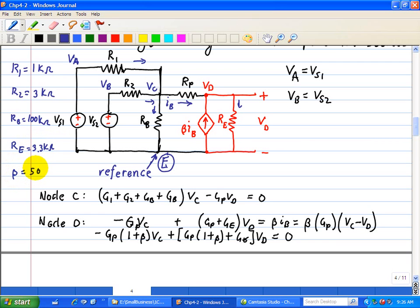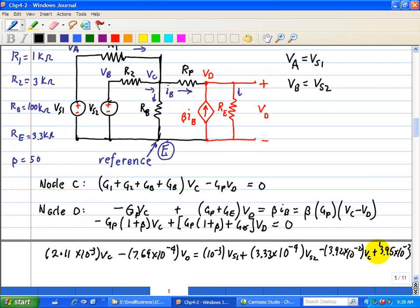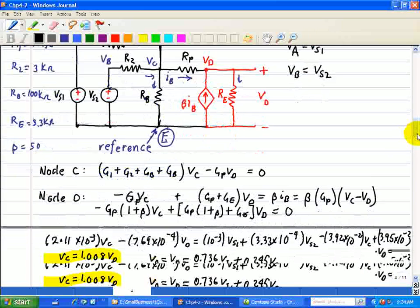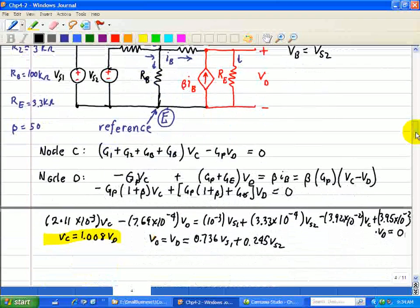Now when we substitute these values into the set of equations that we just did, we have the following in node's equation C and D. So for this equation node C...